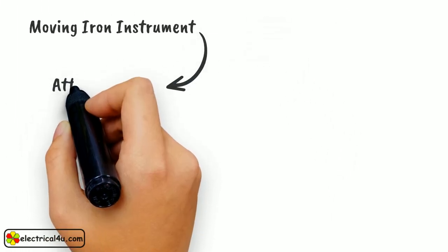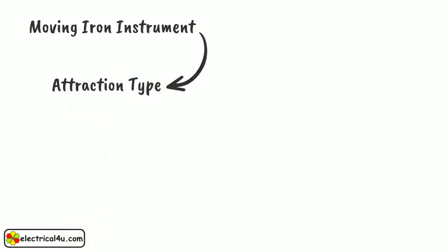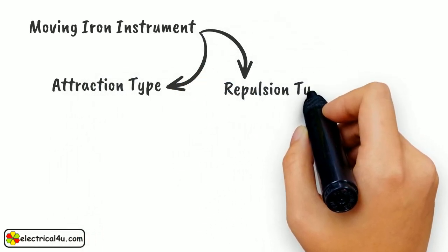The moving iron instrument is mainly classified as two types. One is the attraction type instrument and the other is the repulsion type instrument.